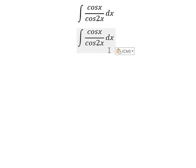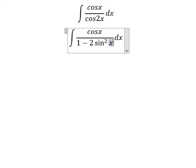We have cos x over cos 2x. We change cos 2x for 1 minus 2 sin squared x. Next we need to use integration by substitution.